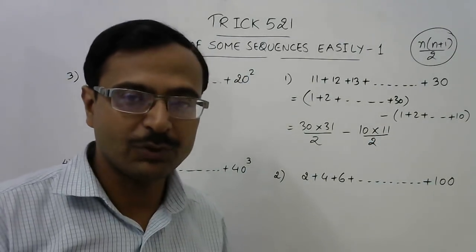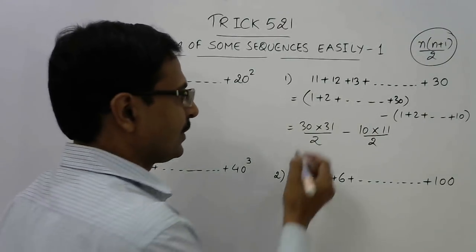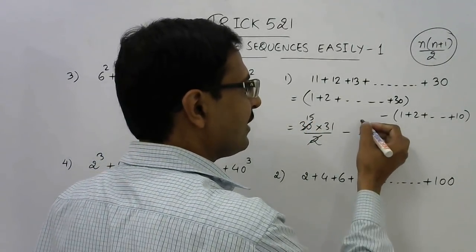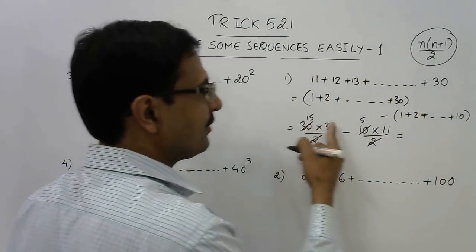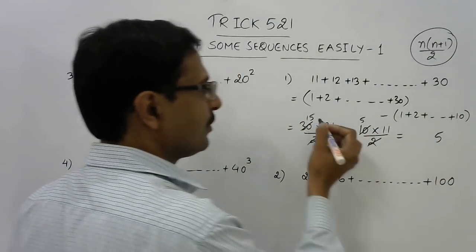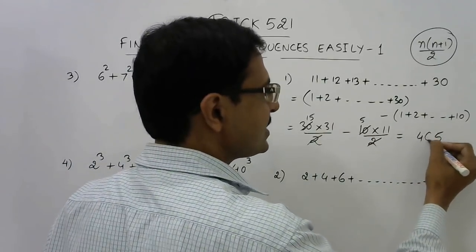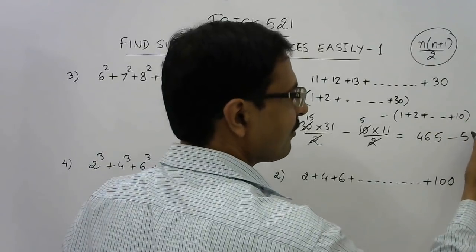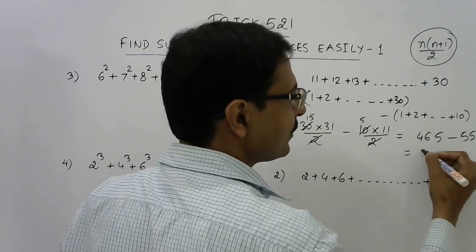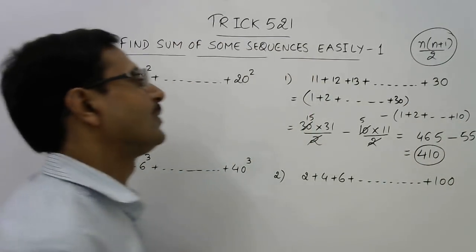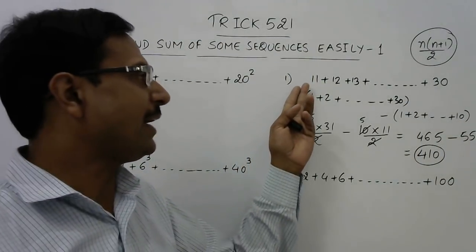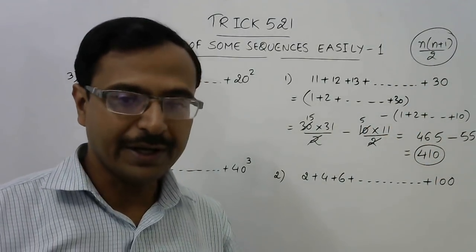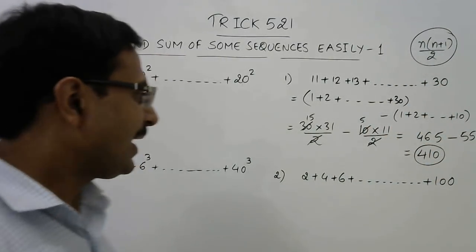Now do the simple calculation: the 2 cancels, giving 15 × 31 = 465, and then subtract 55. So you get the answer 410. The sum of all natural numbers starting from 11 and ending at 30 is 410.